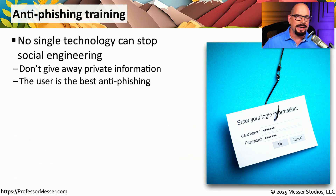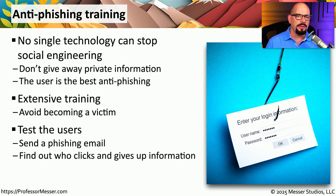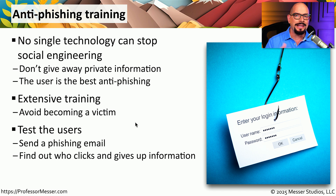One type of attack that is extremely difficult to identify through electronic means is social engineering. This is one of the reasons phishing attacks are so successful — they circumvent our technology and attack the people within our organization directly. This is why many organizations have extensive training on phishing, ensuring that all employees know what this threat looks like and how to react. To see if end users really do remember their training, many organizations will test their users by sending a phishing email and see if anyone clicks on those links. If someone clicks and provides their private information, it may be time for additional training.